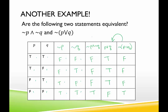Now comparing statement 1 and statement 2: we have false and false — that row is good. False and false — good. False and false — good. True and true — good. Because they have the same truth value at every single row, we say that not P and not Q is equivalent to not (P or Q).